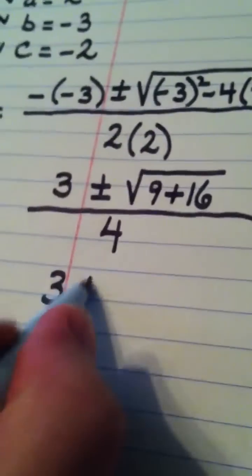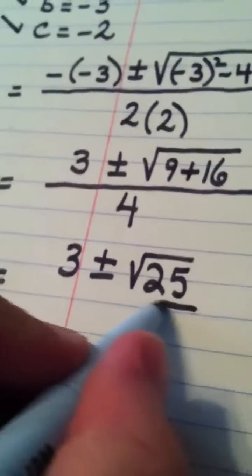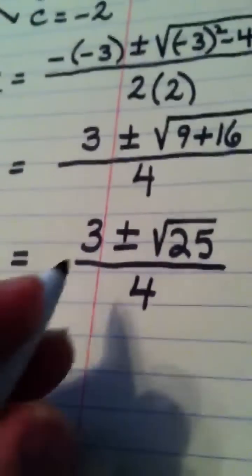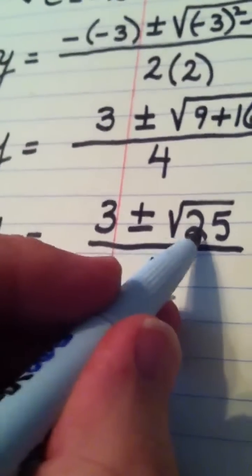So I have y equals 3 plus or minus the square root of 25 all over 4. Now, that is actually, this of course is 5.